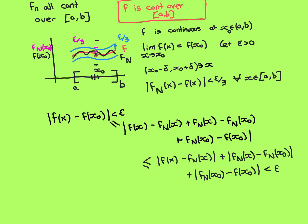So I would like to go over that argument again, and in particular stress how the intuitive argument given with this picture is exactly the same as what we've done with the triangle inequality. We were trying to show that for a general point x0 in the open interval (a, b), the limit of the function at that point equals the value of the function at that point. We needed to take a general epsilon greater than 0 and find a delta interval around x0 such that that delta interval is mapped entirely into the epsilon interval around f of x0.